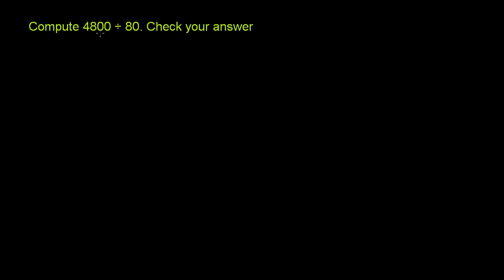We're asked to compute 4,800 divided by 80, and then they want us to check our answer. So I'll first do it just the traditional long division way, and then we'll think about if there's maybe a faster way to do this, or if we could even do it in our heads. So let's just do it the traditional way first.